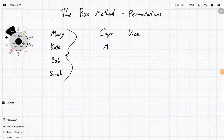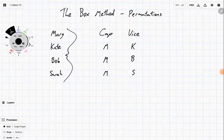Well I could have Mary as the captain, Kate as the vice, Mary as the captain, Bob as the vice, Mary as the captain, Sarah as the vice. Alright, well those are all of those options where Mary is the leader, but then we've also got every other option.